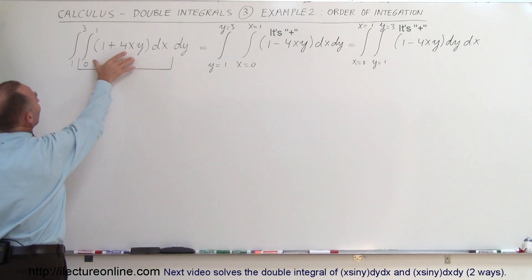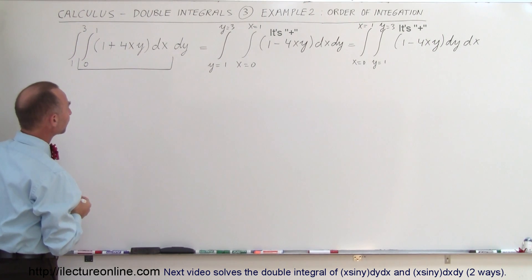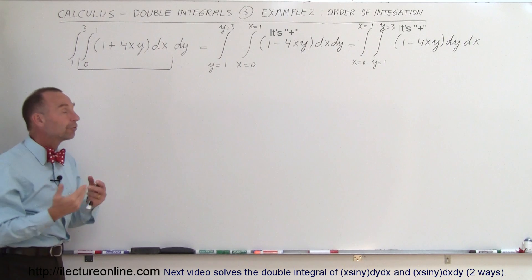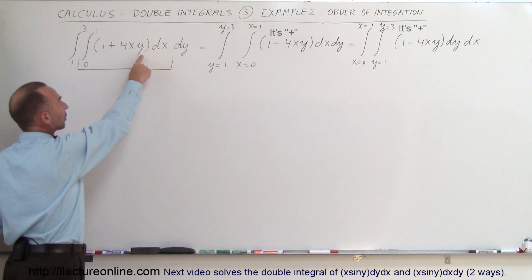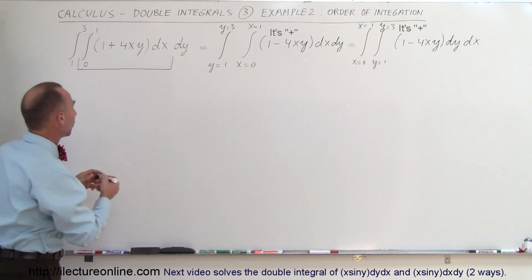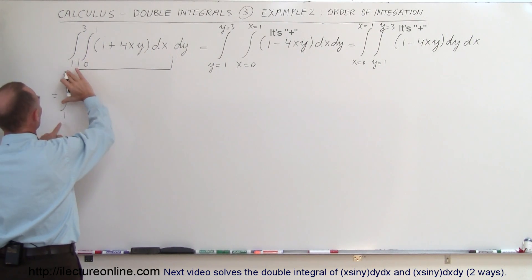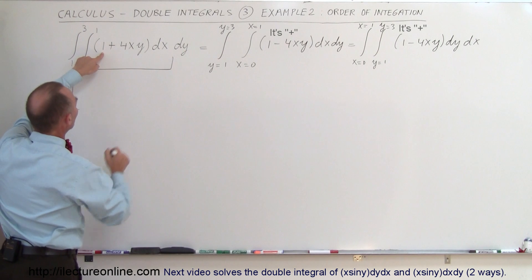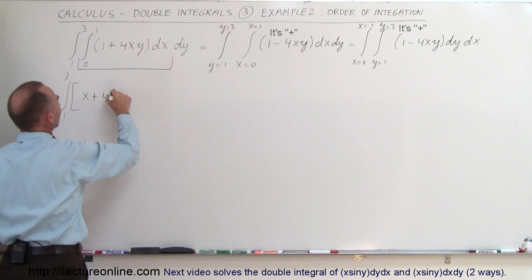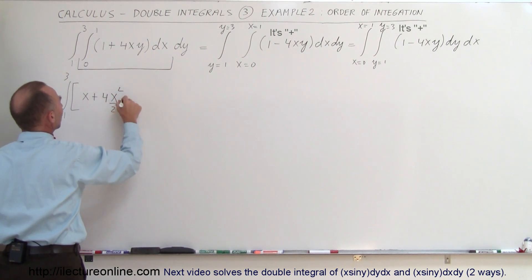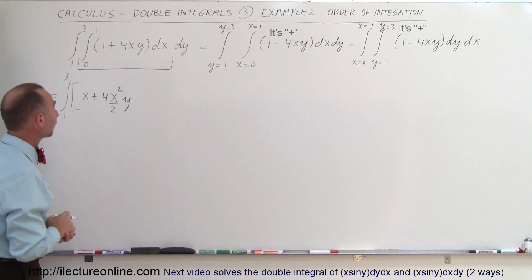First we're going to integrate using dx as the differential, so we integrate over the x variable. Notice that when you integrate the first integral, anything that is not an x is just like a constant. For example, y will simply be a constant when we integrate over x. So this is equal to the first integral from 1 to 3 — those are the y limits — and when we integrate over x, this becomes x minus 4 times x squared over 2 times y, since y acts just like a constant.